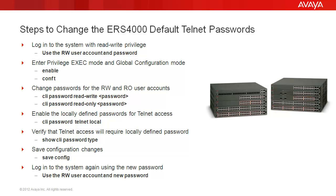Then after that, we will enable the locally defined passwords for telnet access by using the command 'cli password telnet local'. Then we will verify the telnet access will require locally defined password by using the command 'show cli password type'. Then we save the configuration using 'save config'. After that, we will log back into the system with the new password to verify that the new password has taken effect.